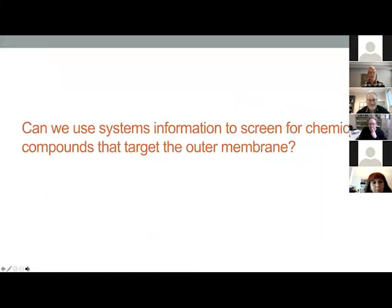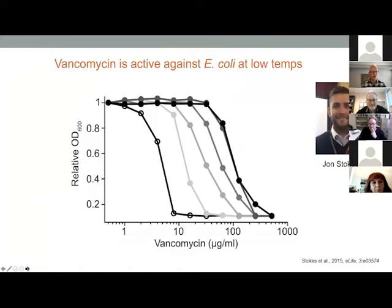The next idea was: could we use this systems information to develop a screen for chemical compounds that targeted the outer membrane? We have fair experience in small molecule screening in my group — something we've been doing for many years. This is John Stokes, who was a PhD student in the lab. He's since done a postdoc with Jim Collins at MIT, and I'm really delighted to say that John has joined us as faculty — an assistant professor at McMaster as of July 1st. John was actually doing something completely different, but found this phenomenon and had the foresight to understand how valuable it might be.